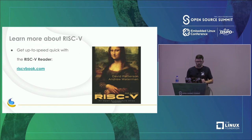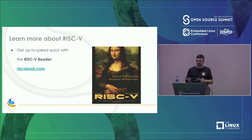A great way to get up to speed with RISC-V is a short book — about 100 pages — called The RISC-V Reader. You can find it at riscvbook.com and they even have translations to other languages. It's a great way to get up to speed in a short time.